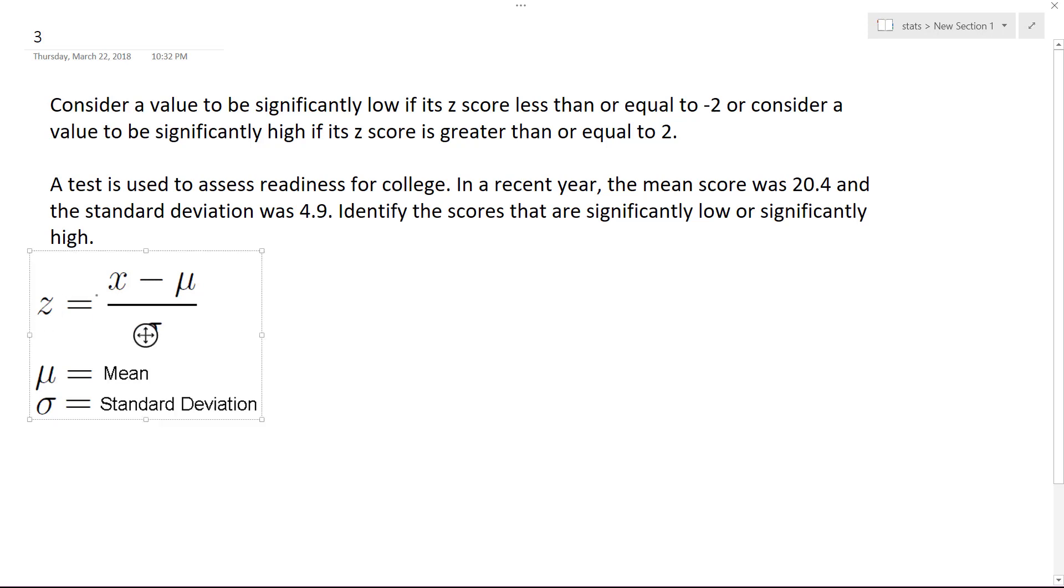They have the criteria for the z-score, so significantly low is negative 2. We don't know what X is going to be, but we know that our mean is 20.4 and our standard deviation is 4.9.